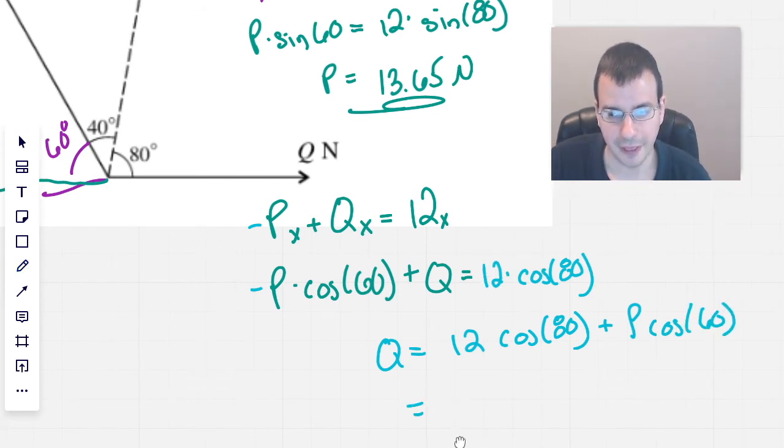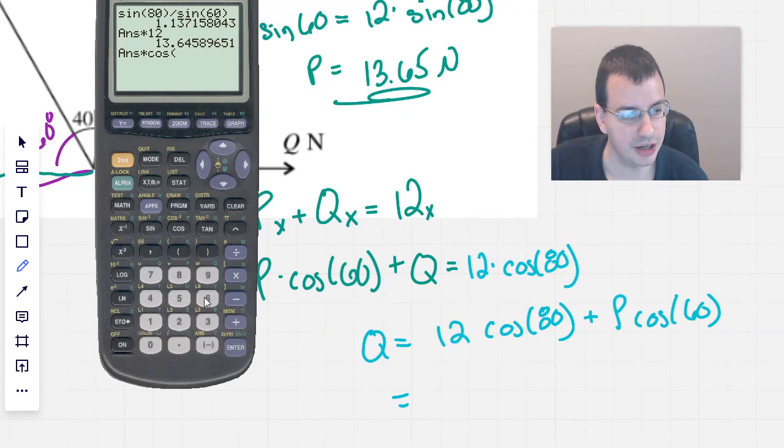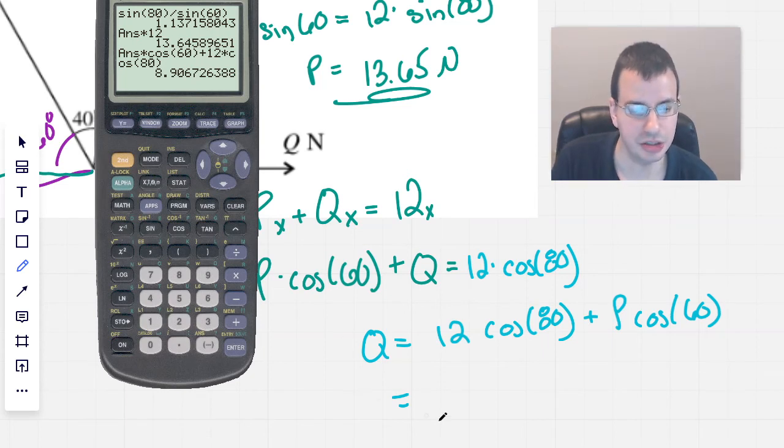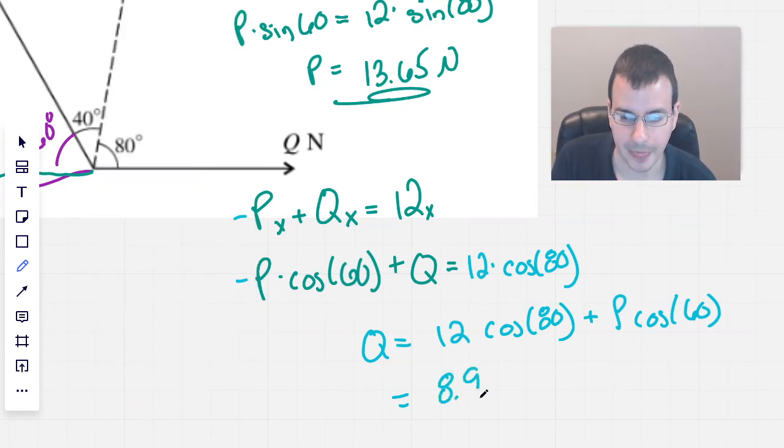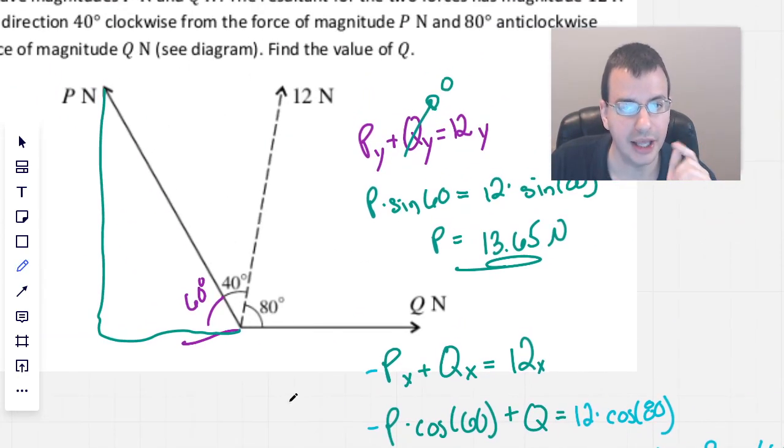And so, calculator. So that's P right there, times cosine of 60, plus 12 times cosine of 80. We get 8.907 Newtons. And so the value of Q will be 8.907 Newtons.